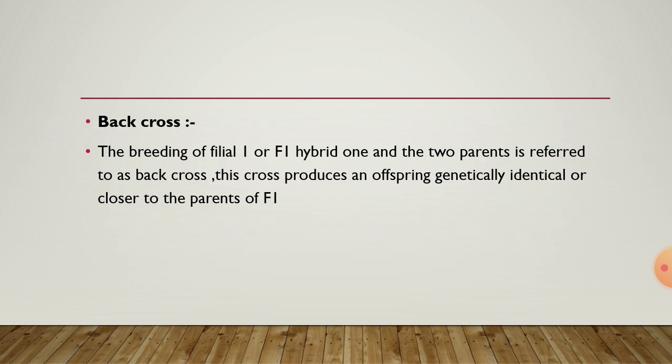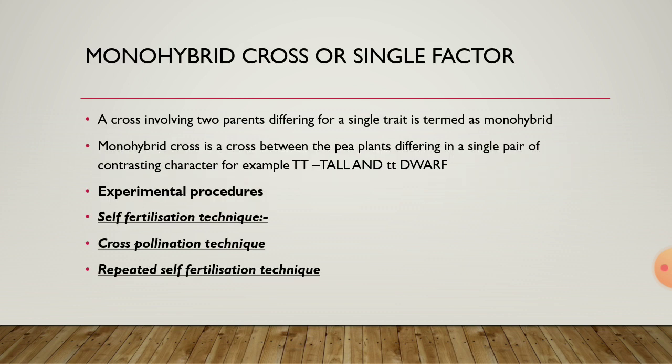Back cross: the breeding of an F1 hybrid with one of the two parents is referred to as a back cross. This cross produces an offspring genetically identical or closer to the parents. Next is monohybrid cross or single factor: a cross involving two parents differing for a single trait is termed as monohybrid. A monohybrid cross is a cross between parent plants differing in a single pair of contrasting characters.